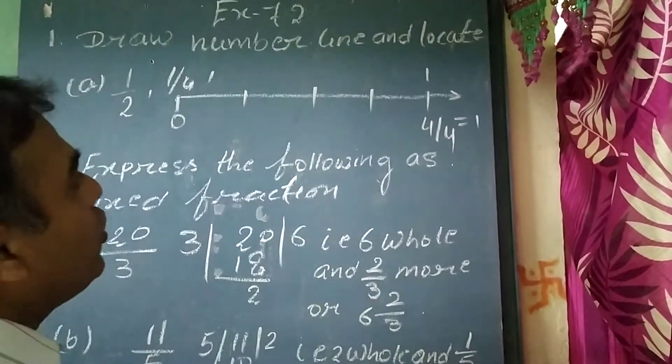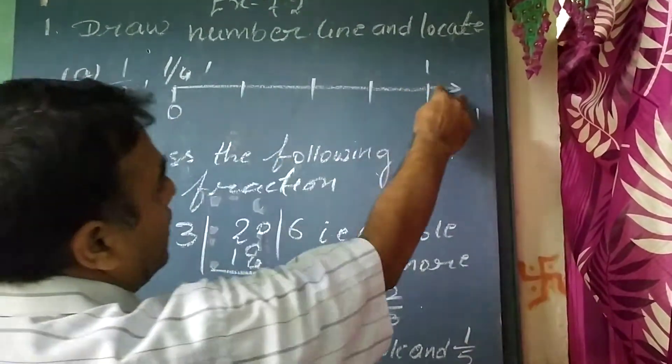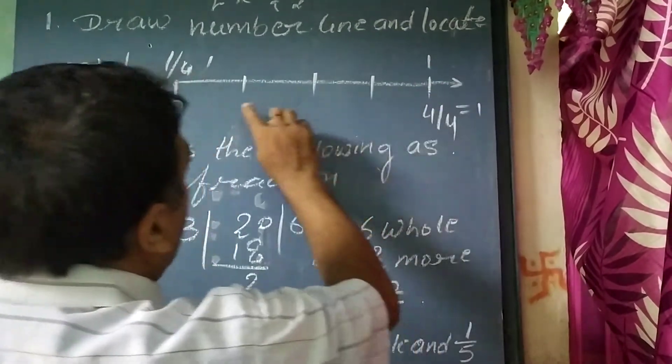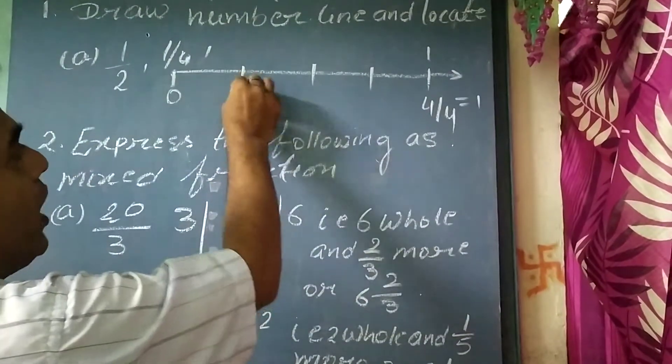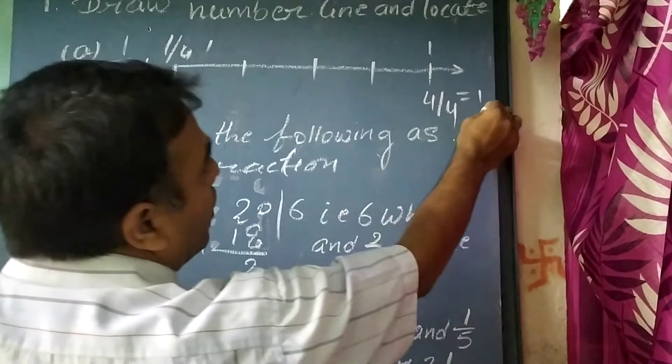How will we locate it? We have taken the interval from 0 to 1, and we have divided 1 unit into 4 equal parts: 1, 2, 3, and 4. So, 4/4 equals 1.